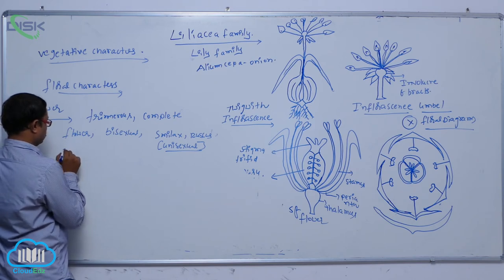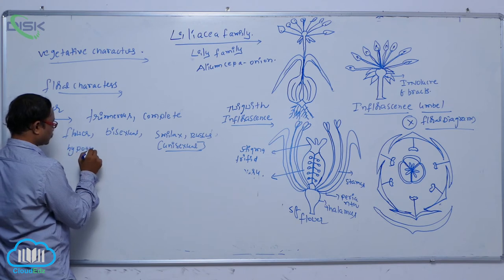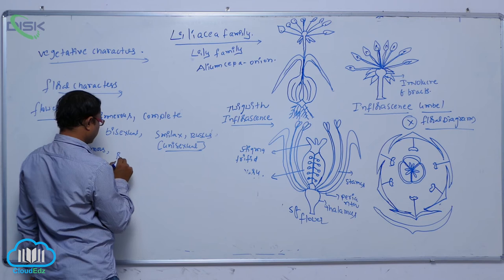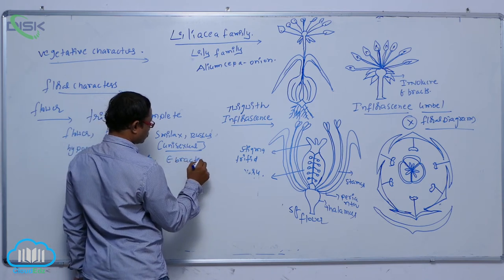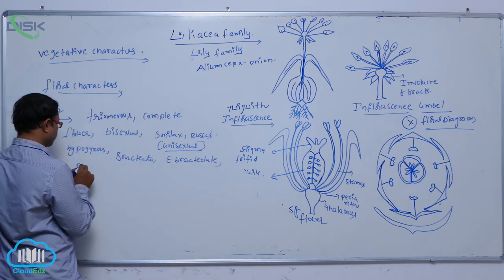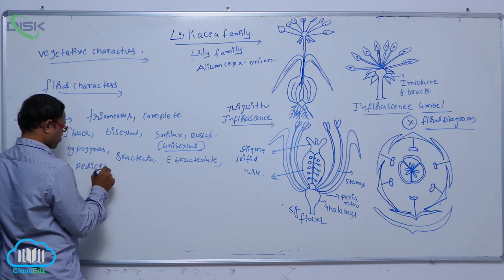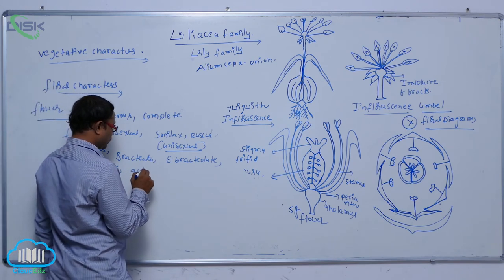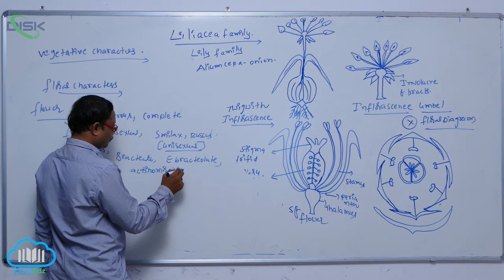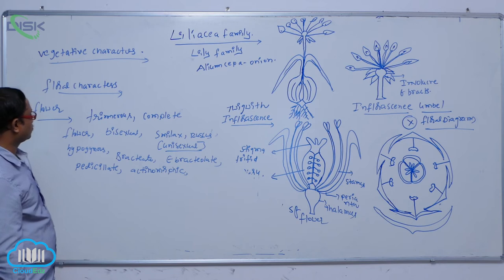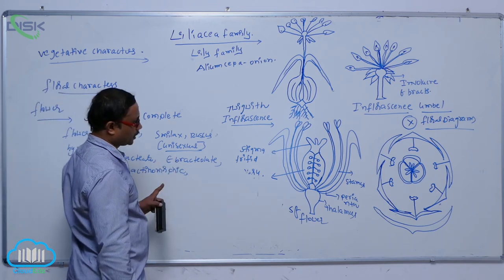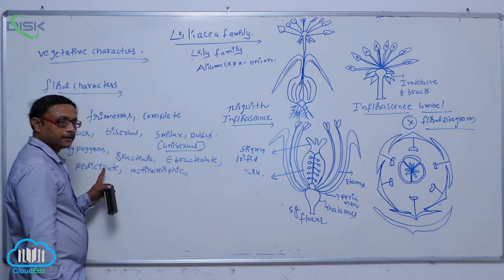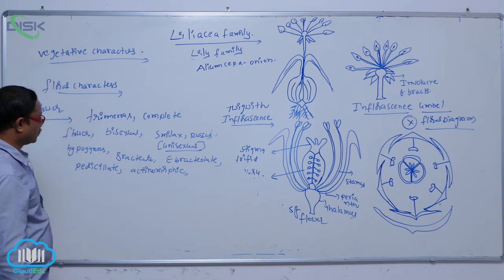The flower is hypogynous. Bracts are present, so it is a bracteolate flower. Bracteoles are absent, so it is ebracteolate. Pedicels are present, making it a pedicellate flower. And it is an actinomorphic flower. So these are the flower characters.